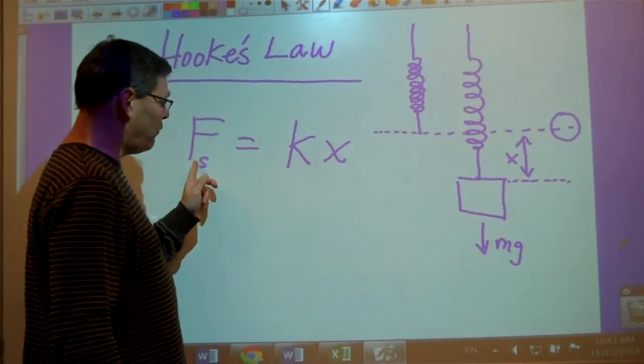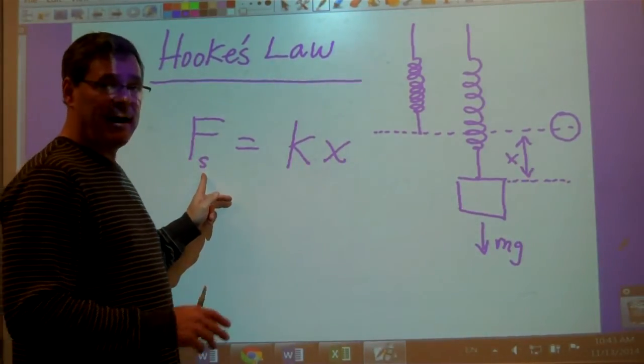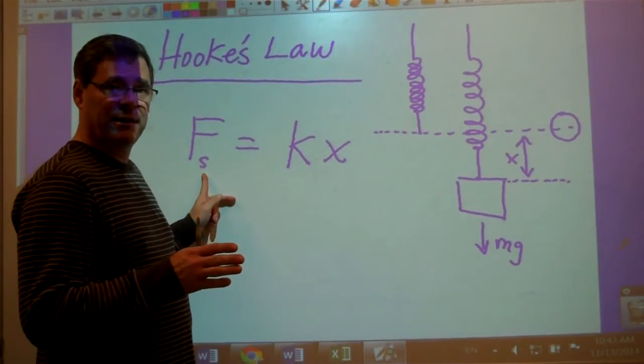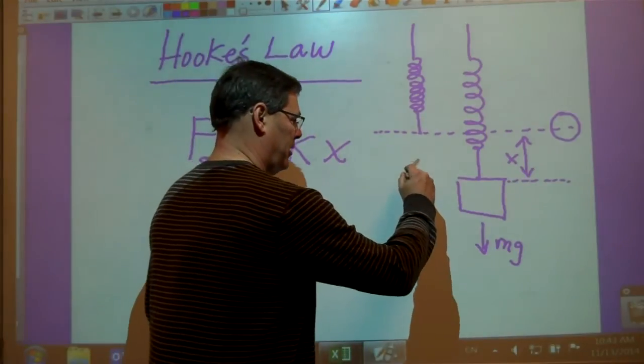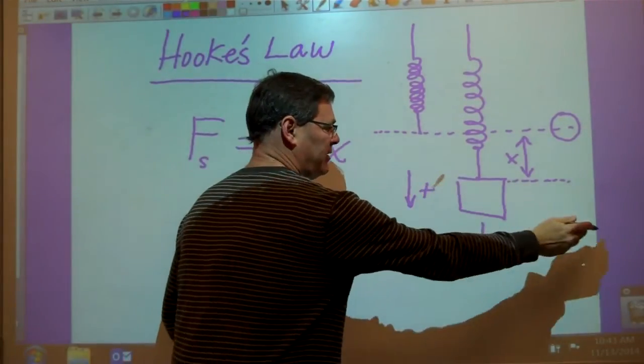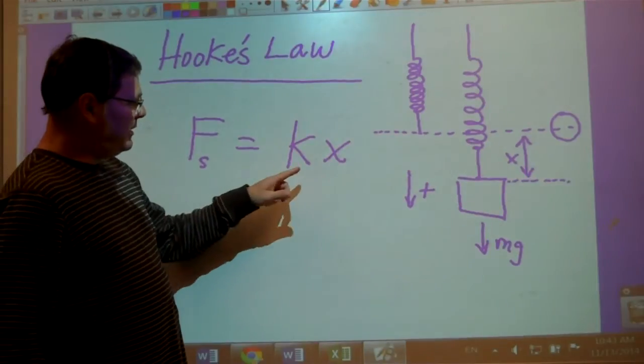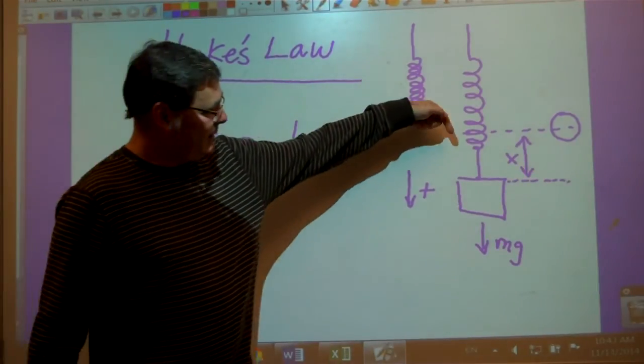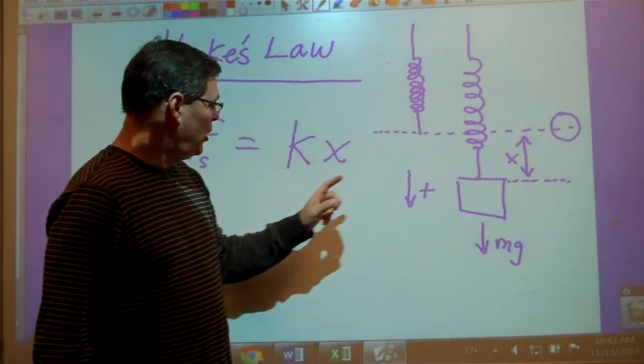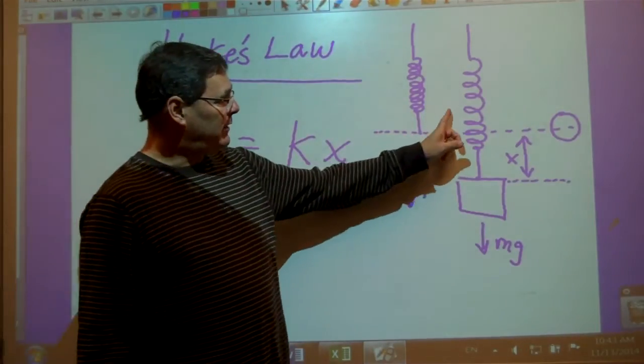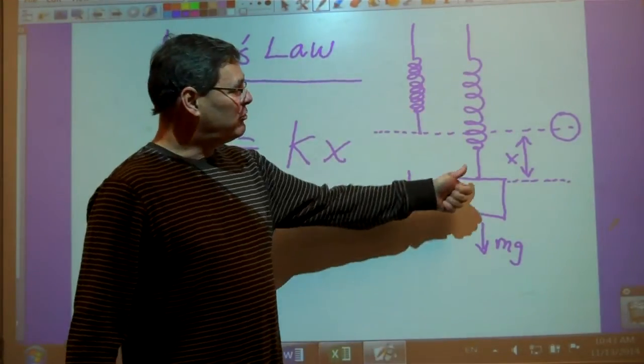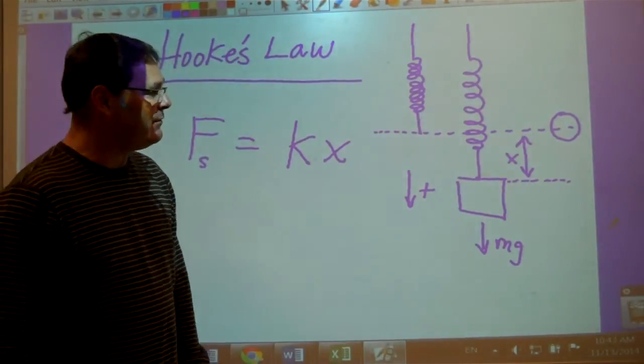So if I look at the force from the spring, and if I include direction with this, I'll choose the downward direction to be positive for this example. That means the displacement x was in the positive direction. But the force from the spring is pulling up on the weight. So the force from the spring is in the negative direction.